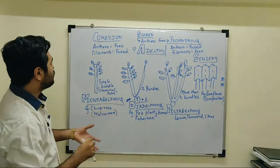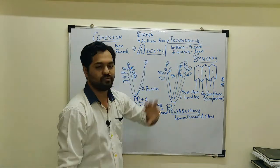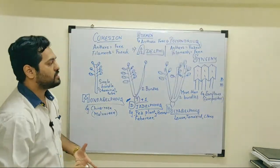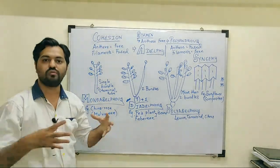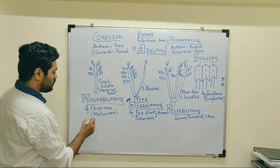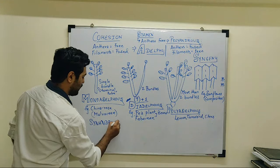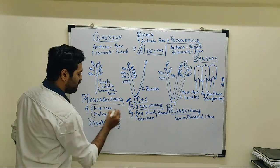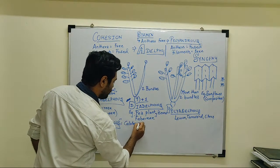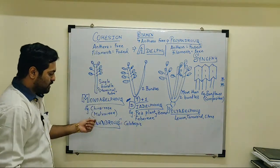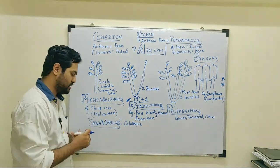There is also a possibility where both the filaments and anthers are fused. Such a condition is known as synandrous. Synandrous condition is also observed, and it is seen in Calotropis. In synandrous condition, since both filaments and anthers are fused, quite an enlarged structure is represented.